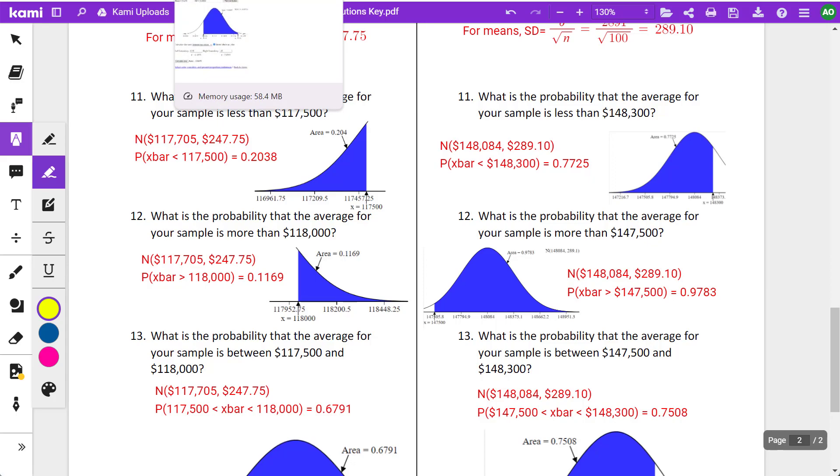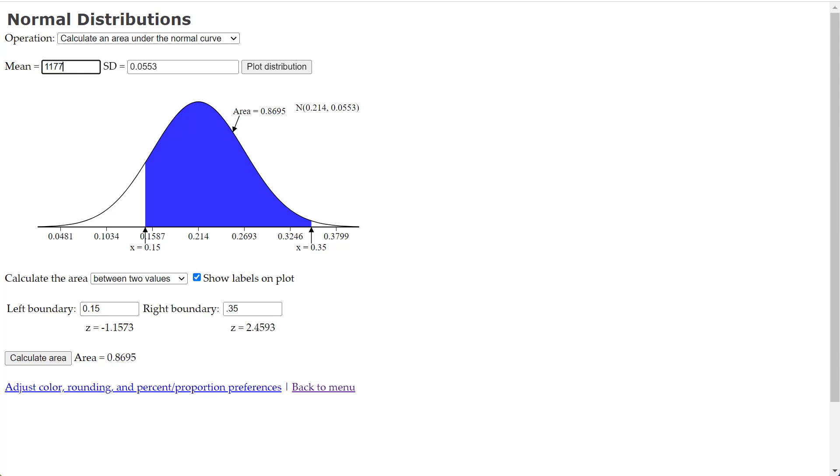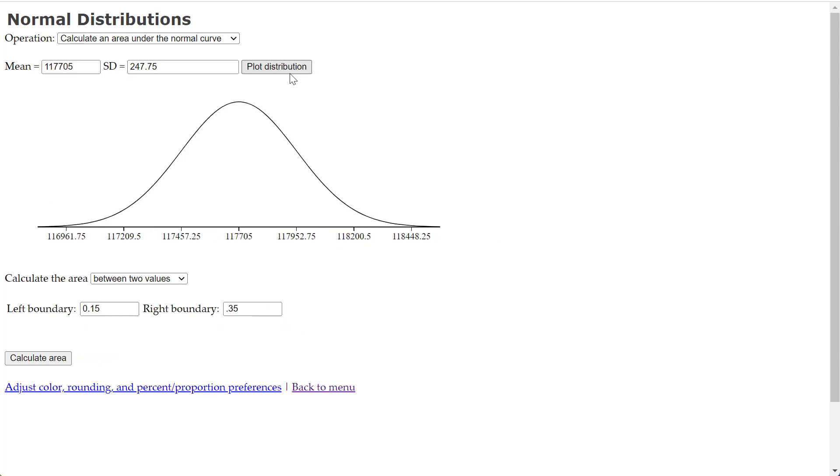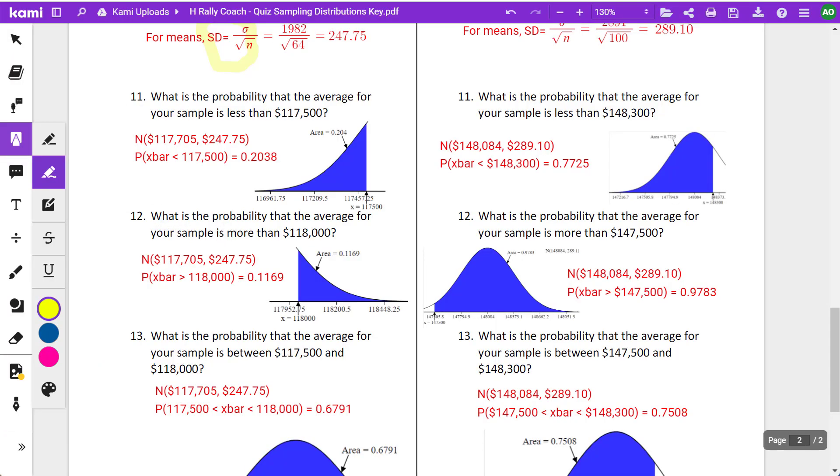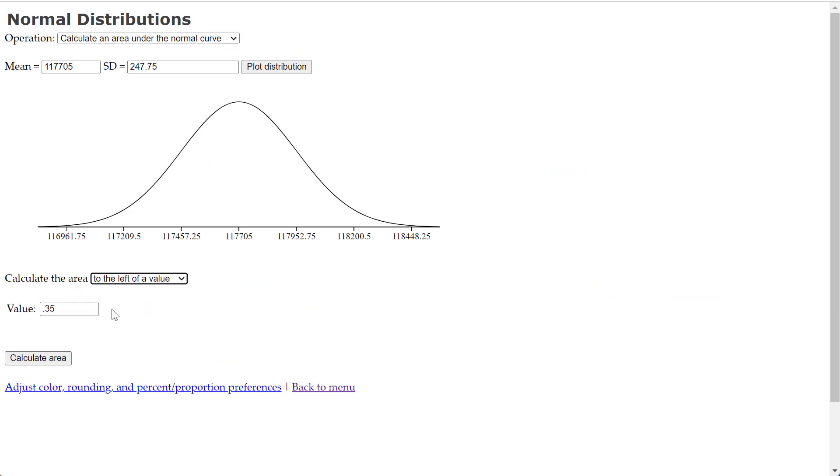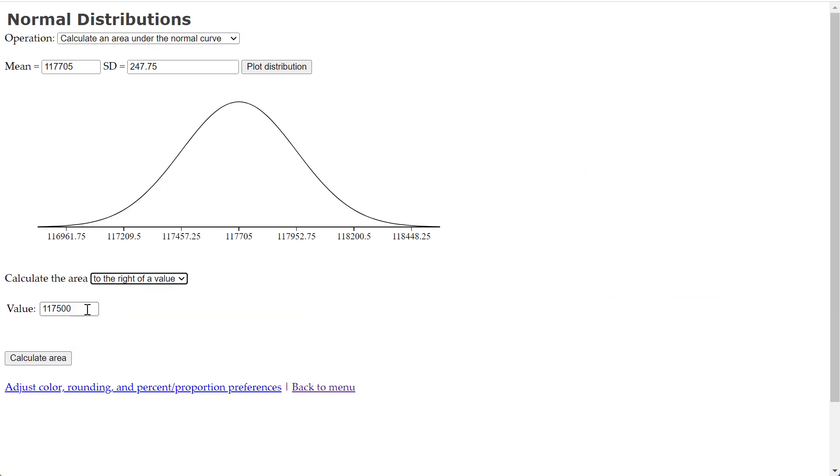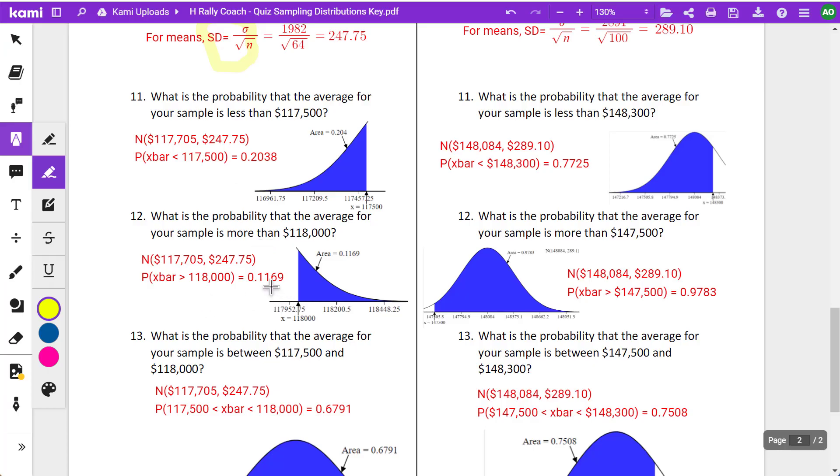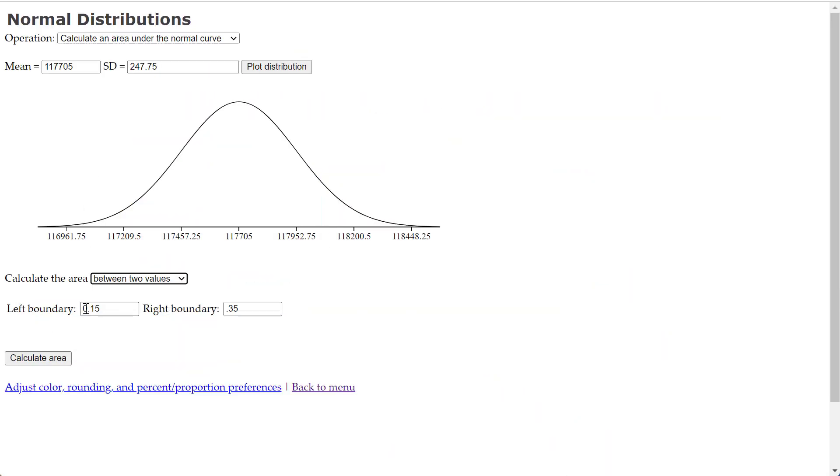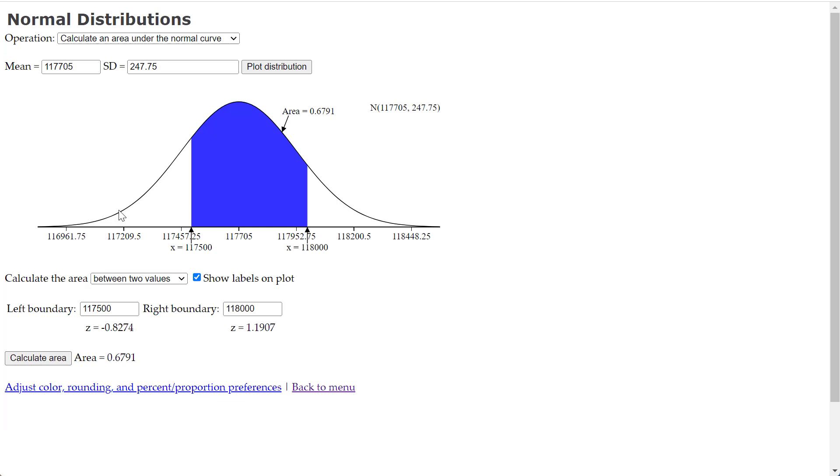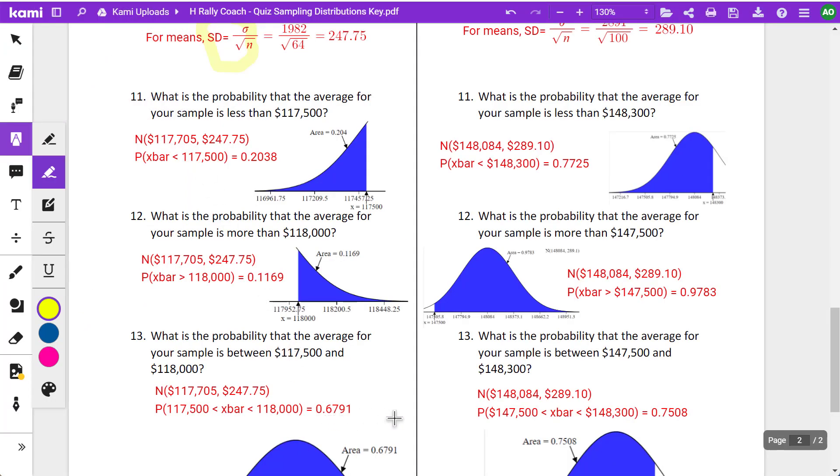So now we have both our distributions. I'll work through these three problems. 117.705 and 247.75, plot my distribution. The first question was less than 117,500 to the left of 117,500, calculate the area 0.204. More than 118,000, so that's to the right of 118,000. And we're getting 0.1169. And then finally between those two values, 117,500 and 118,000. And I'm getting 0.6791, which is the correct answer right there.